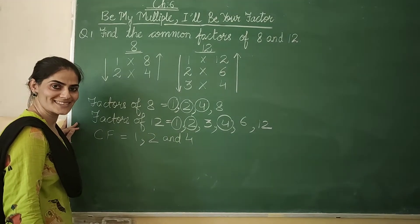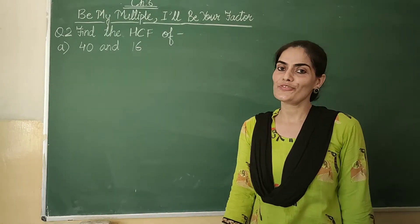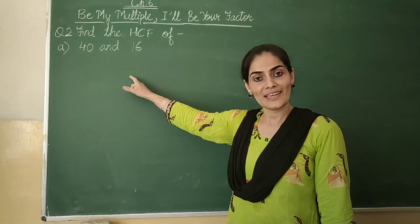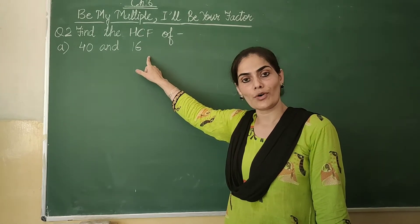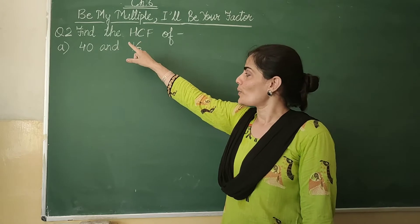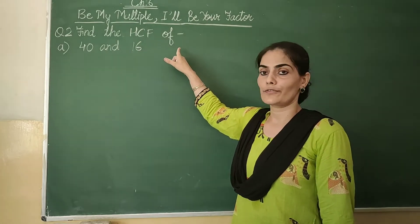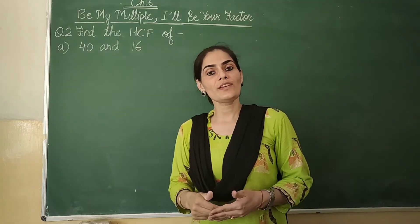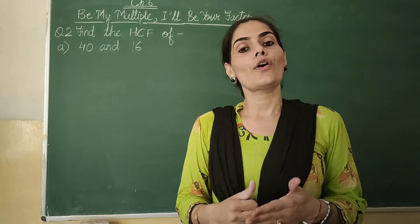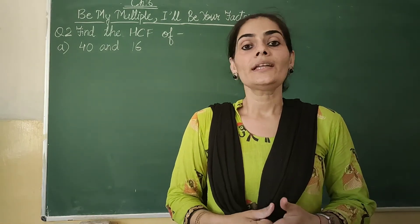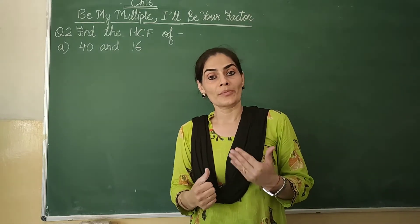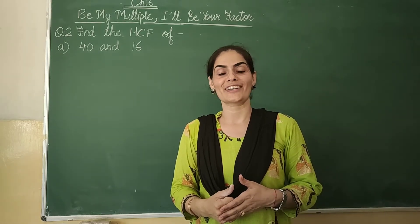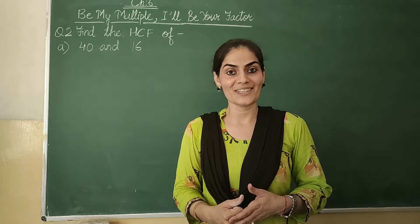After learning how to find the common factors of 2 numbers, now we will learn how to find the HCF of 2 numbers. The question states: find the HCF of 40 and 16. Again, first we will find all the factors of 40 as well as 16, then find the common factors, and finally from those common factors we will find the highest common factor.